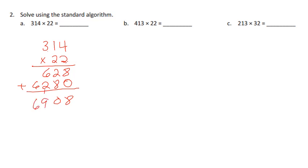So when we add everything up we're going to have 10, carry our 1, which is 9, and 6908. Now if we do an estimation, 314 is closer to 300, 22 is closer to 20, multiply them, I know 2 times 3 is 6, and I have 3 zeros, so our estimation is pretty close.